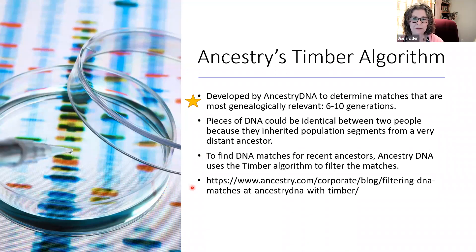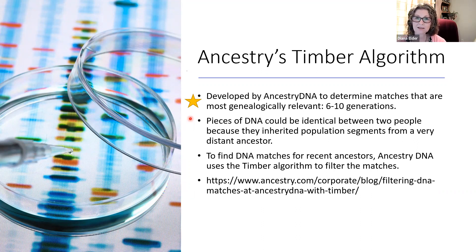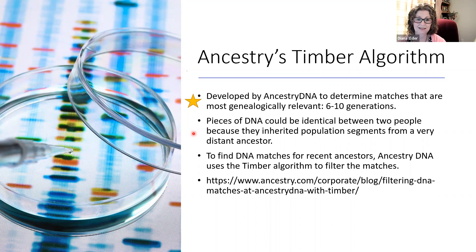From Ancestry's white paper — you can go and read their scientific white paper — it talks about how Timber is the algorithm that Ancestry DNA developed to determine matches that are most genealogically relevant, six to ten generations. These are the matches we are working with to figure out our common ancestry and confirm lines on our family tree. They know that pieces of DNA could be identical between two people because they inherited population segments from a very distant ancestor. Those very distant ancestors we will never be able to identify, so we don't want to work with those segments. To find DNA matches for recent ancestors, Ancestry DNA uses the Timber algorithm to filter the matches.